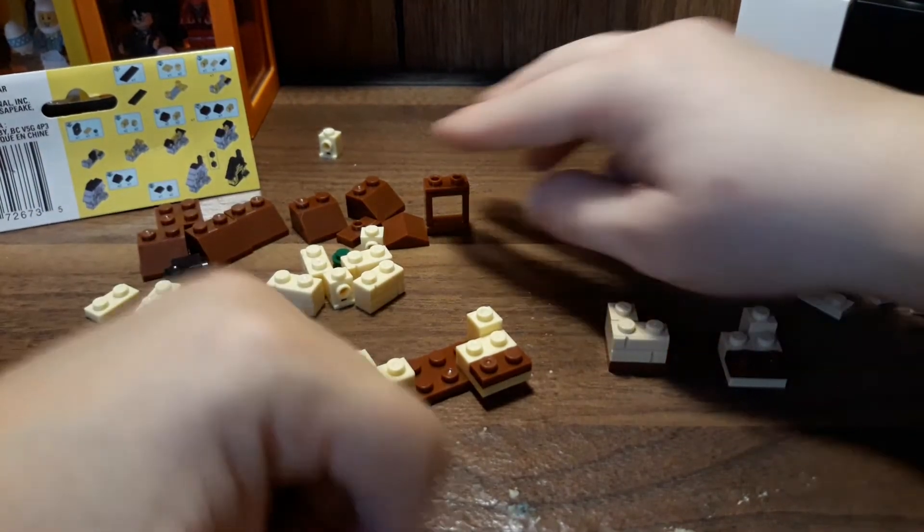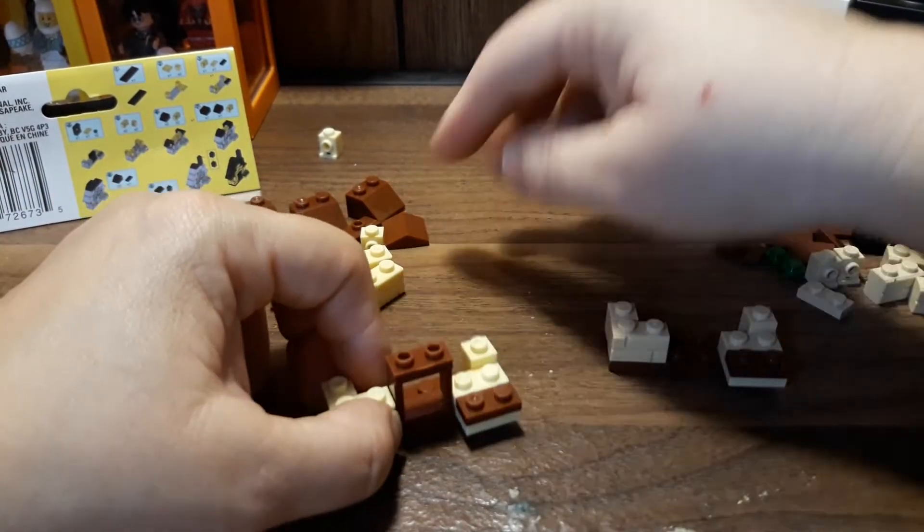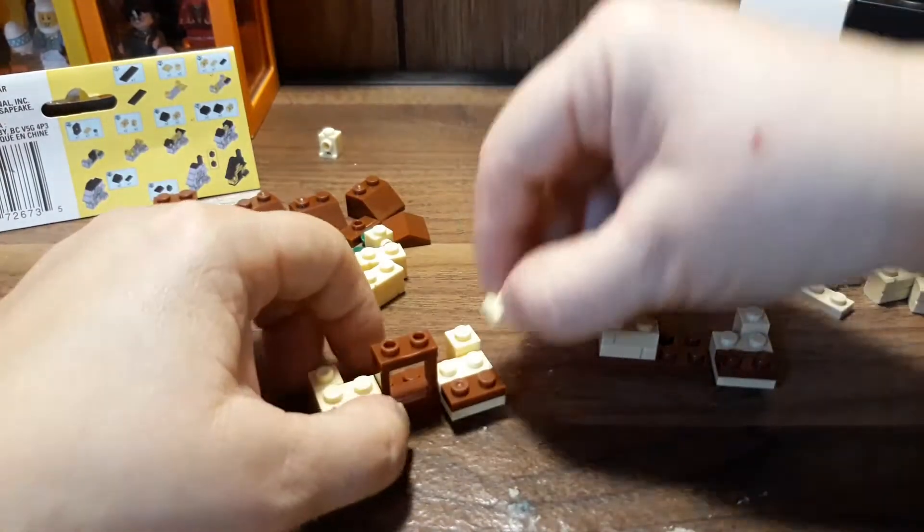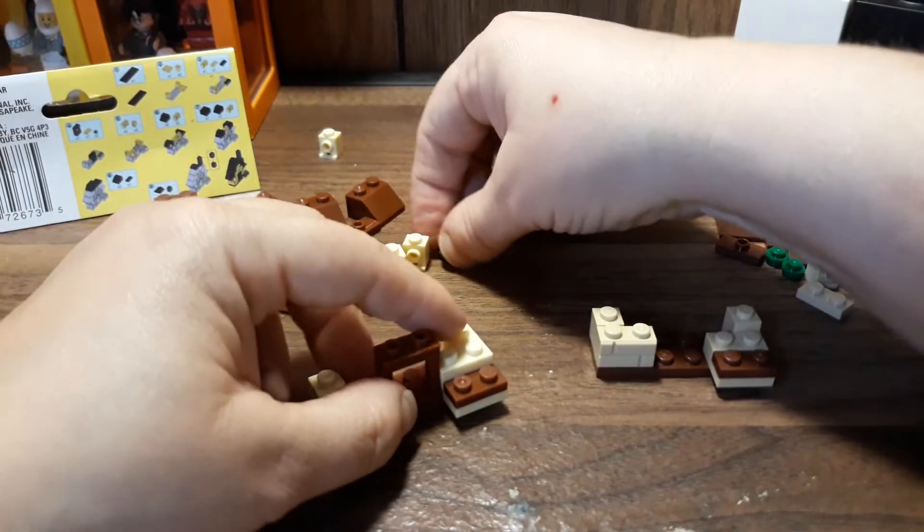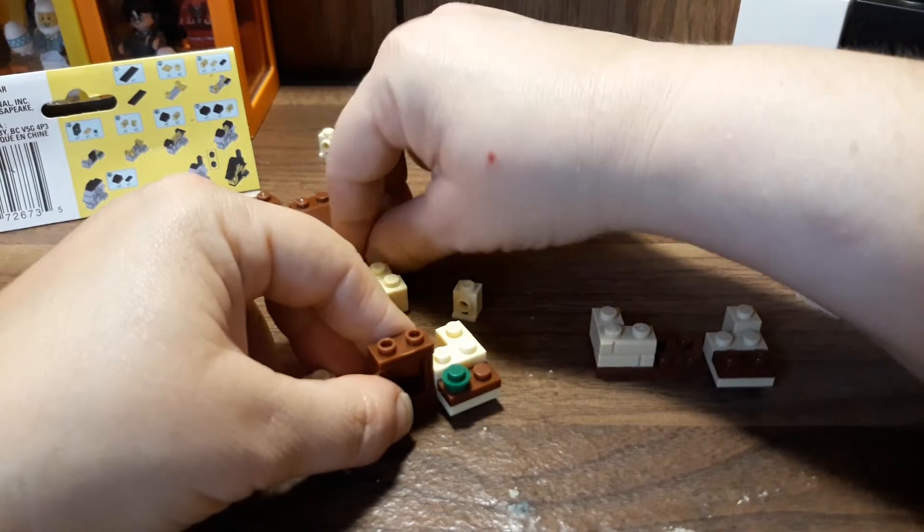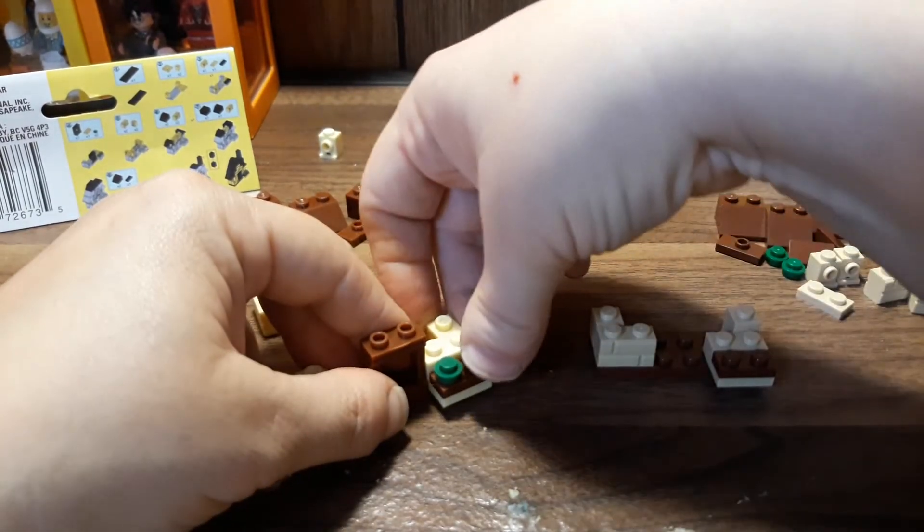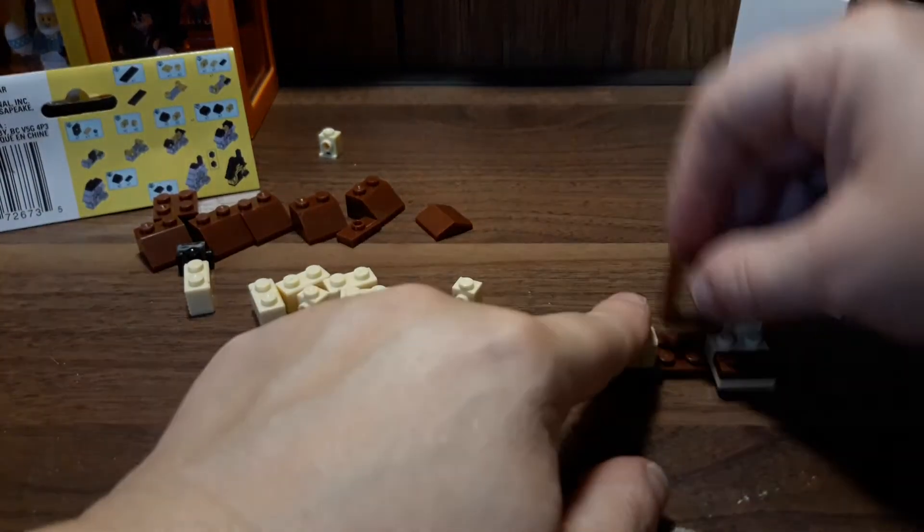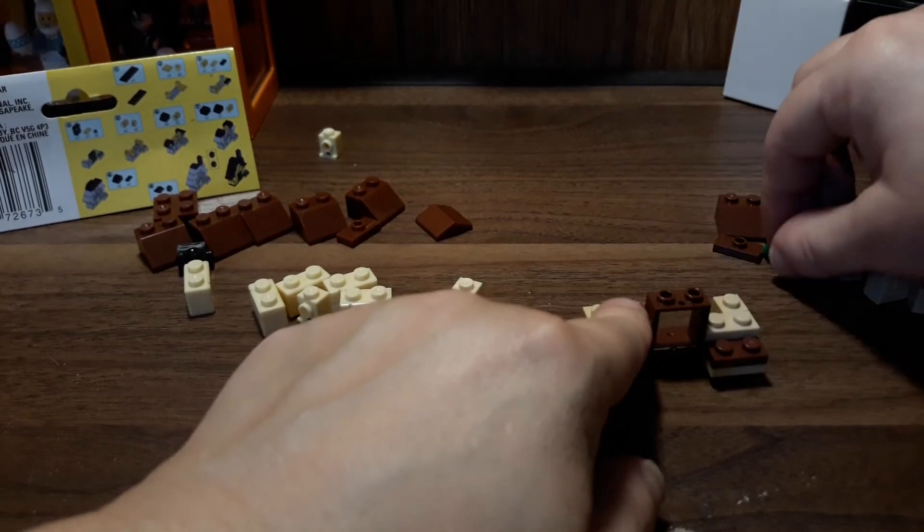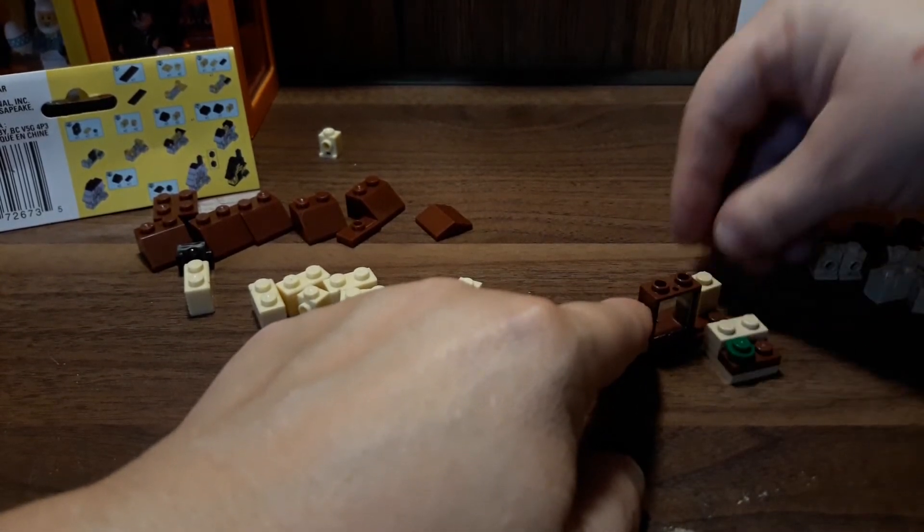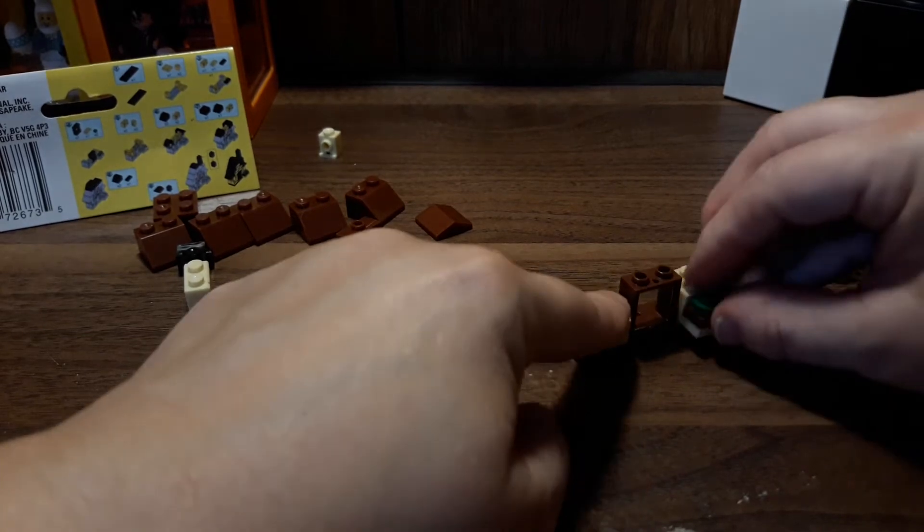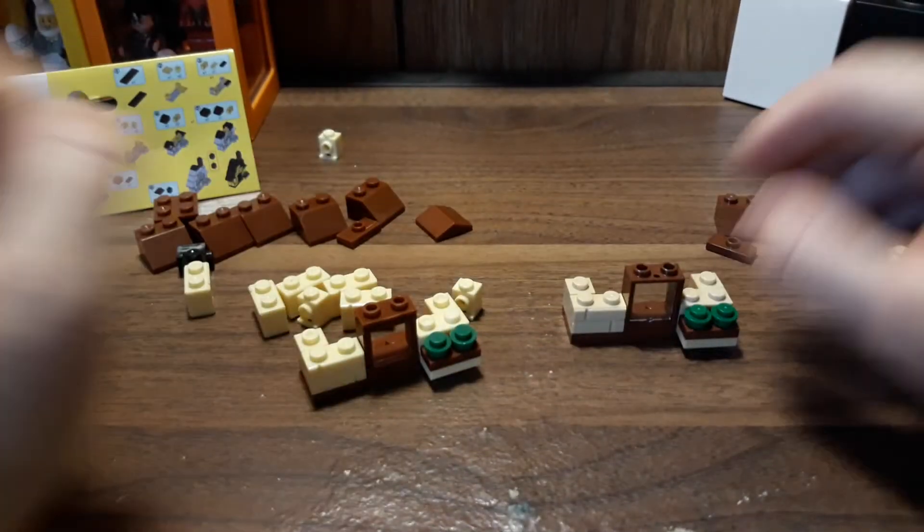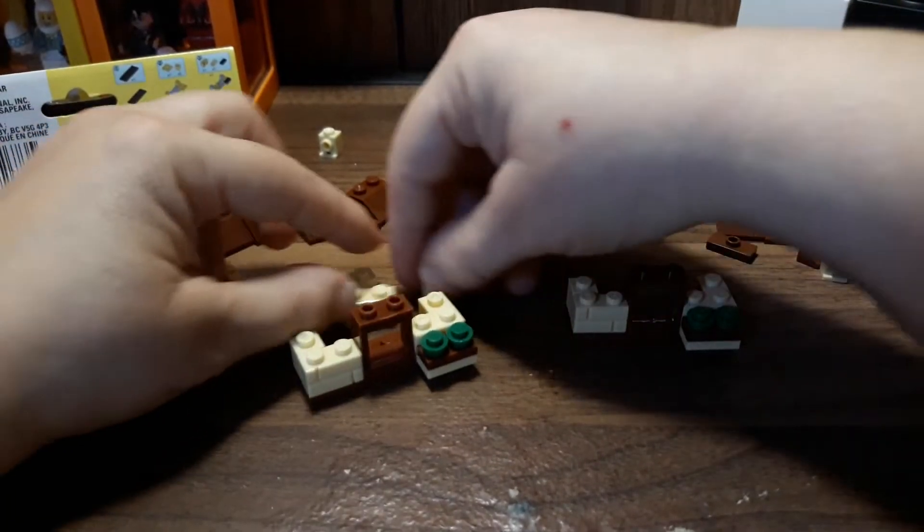For step four we have to place the window and the other one by two tile and the one by one round studs. Let's place those on the Lego version as well. That's okay if it popped off, it just goes right back on. So yeah it's like a little flower plant or whatever.